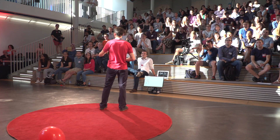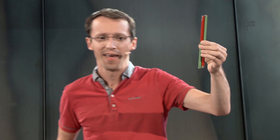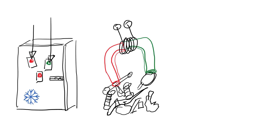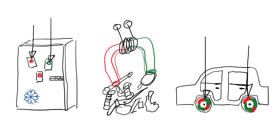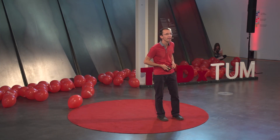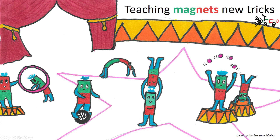Magnets you might know from the fridge at home — maybe a bit smaller, sticking postcards there. You might use magnets to sort metal scrap. You might use magnets in your electric vehicle. So magnets are everywhere, but they are big. We want to do something else — we want to teach magnets new tricks by putting them on a chip. We try to make them very tiny, and here we go with computation.